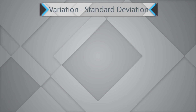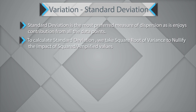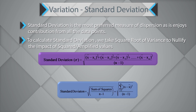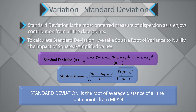Standard deviation is the most preferred measure of dispersion as it enjoys contribution from all data points. To calculate standard deviation, we take the square root of variance. Standard deviation equals the square root of the sum of squared differences of all data points from the mean, divided by n minus 1, which can also be written as the square root of sum of squares divided by n minus 1. Standard deviation is the root of the average distance of all data points from its mean.